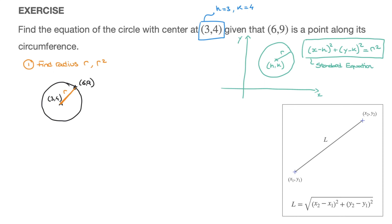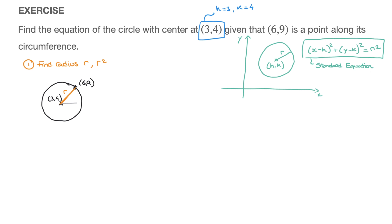What I prefer to do to find the length of a line segment is to visualize the right-angle triangle for which the line segment is the hypotenuse. The radius is this right-angle triangle's hypotenuse. The horizontal side length at the bottom equals 6 minus 3, which is 3. The vertical side length equals 9 minus 4, which is 5.